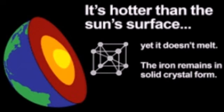The inner core also has iron and nickel as its major elements. The temperature here is almost equivalent to the surface temperature of the sun. This layer extends from 5,150 kilometers to 6,276 kilometers.